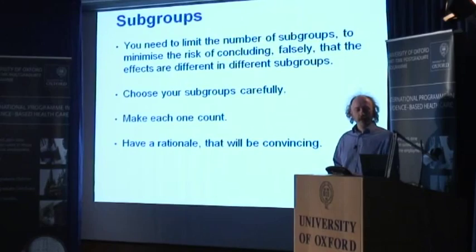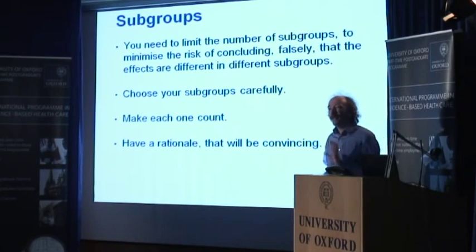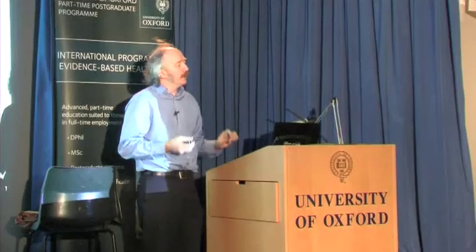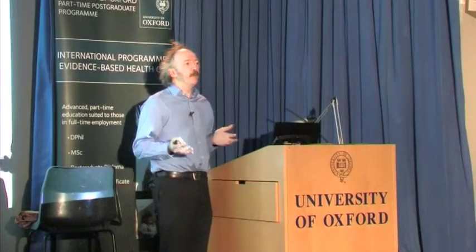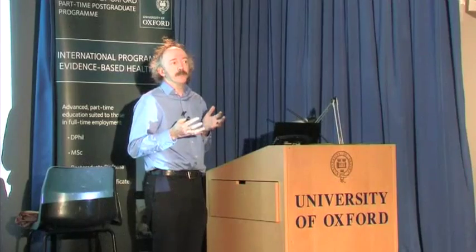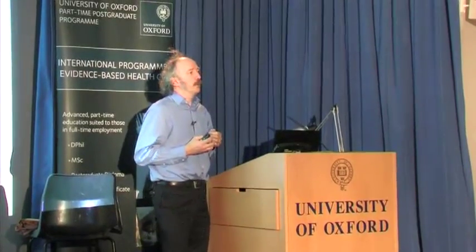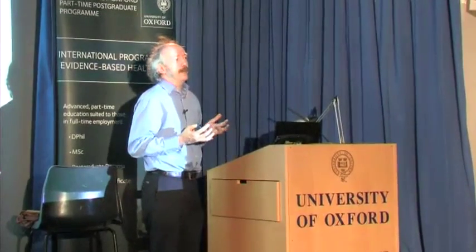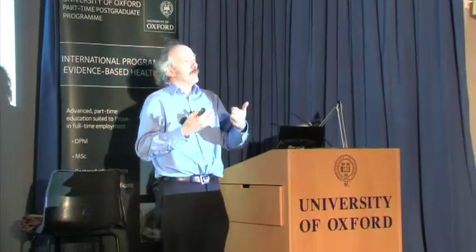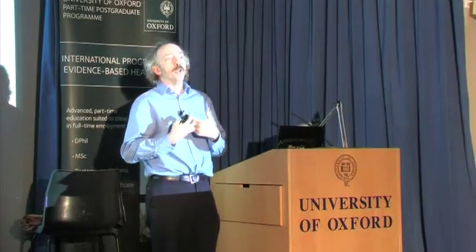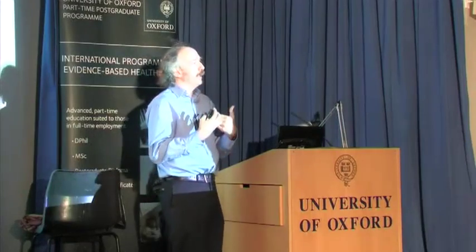Choose the subgroups carefully — make each one count. It's just the same as the multiplicity issue, and that's why the two merge together. Don't smash the data apart in as many different ways as possible just to explore what individual characteristics might do to the result, because every time you do that, you're giving yourself more opportunity to find a false positive. We can try and correct our mathematics — there are techniques to say, if we're going to do that many tests, we really shouldn't just be using a 0.05 threshold. We should lower that threshold.